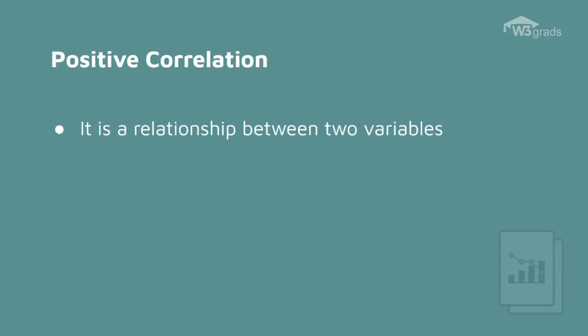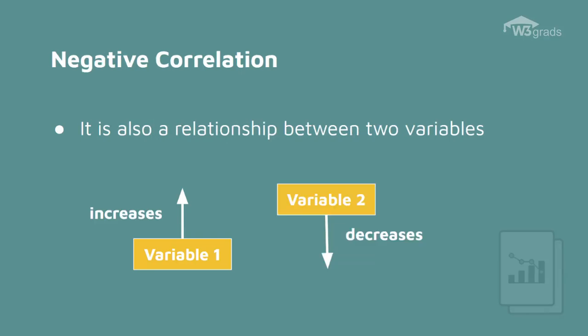Positive correlation is a relationship between two variables in which both variables move in the same direction. This is the case when one variable increases and the other variable also increases. However, for negative correlation, when one variable increases, the other variable decreases.